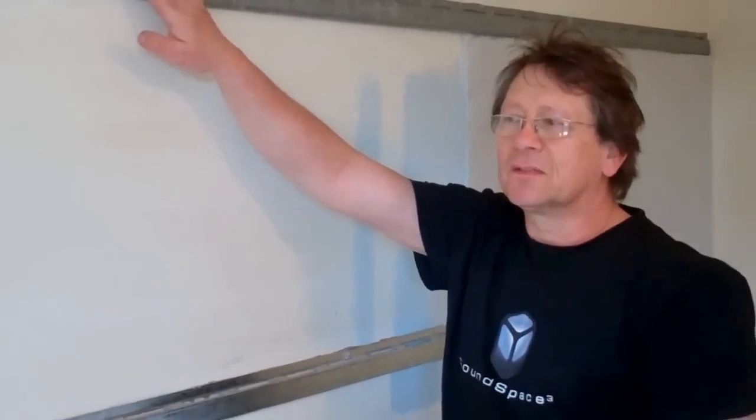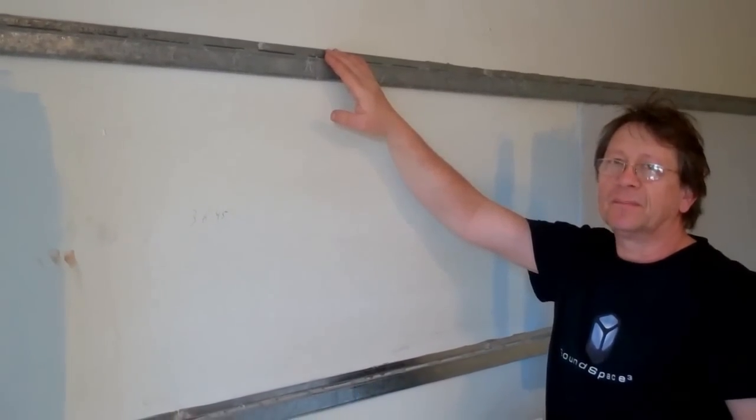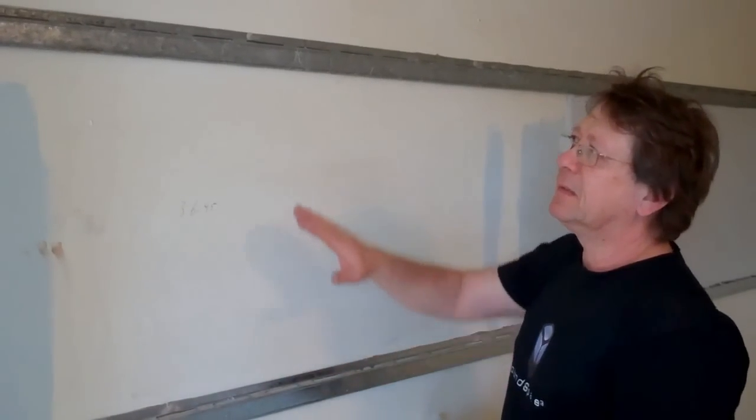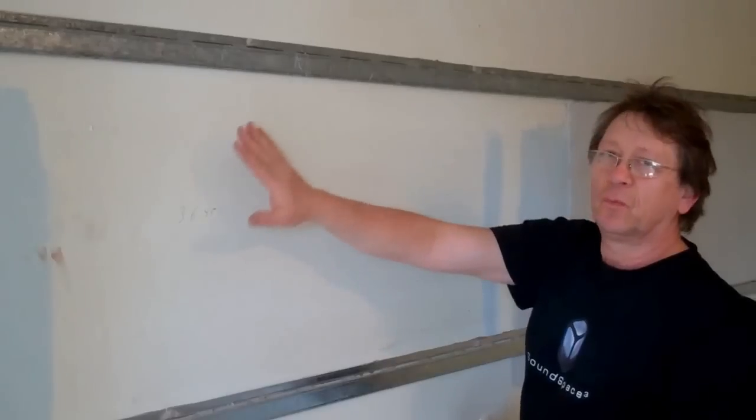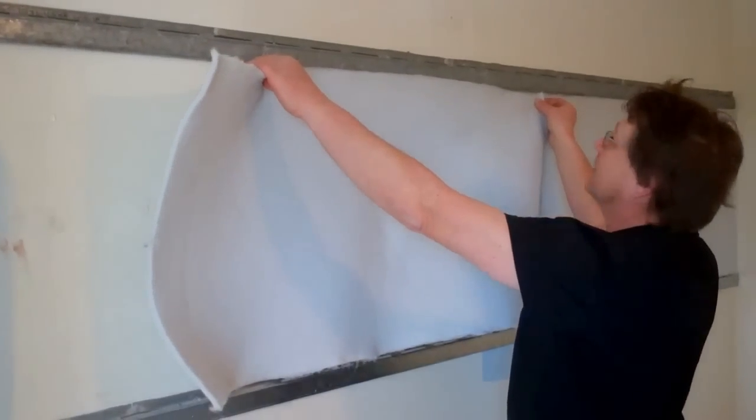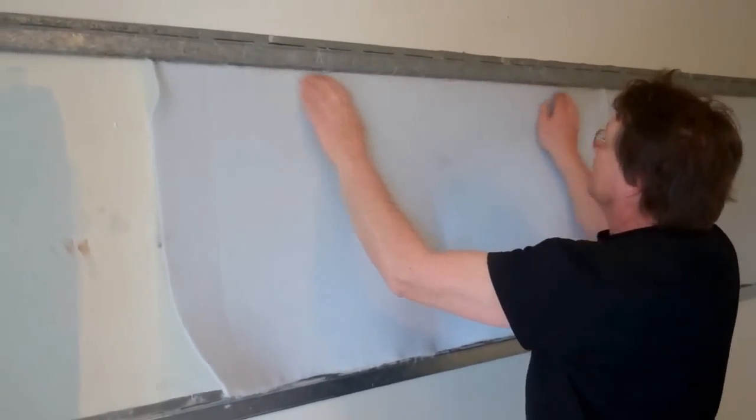We did install all the furring channels. The spacing is maximum 600 mil, roughly 2 feet I guess. Then I'm going to spray the wall already with the glue and I'm going to just add the absorbers. Just glue it on the wall.